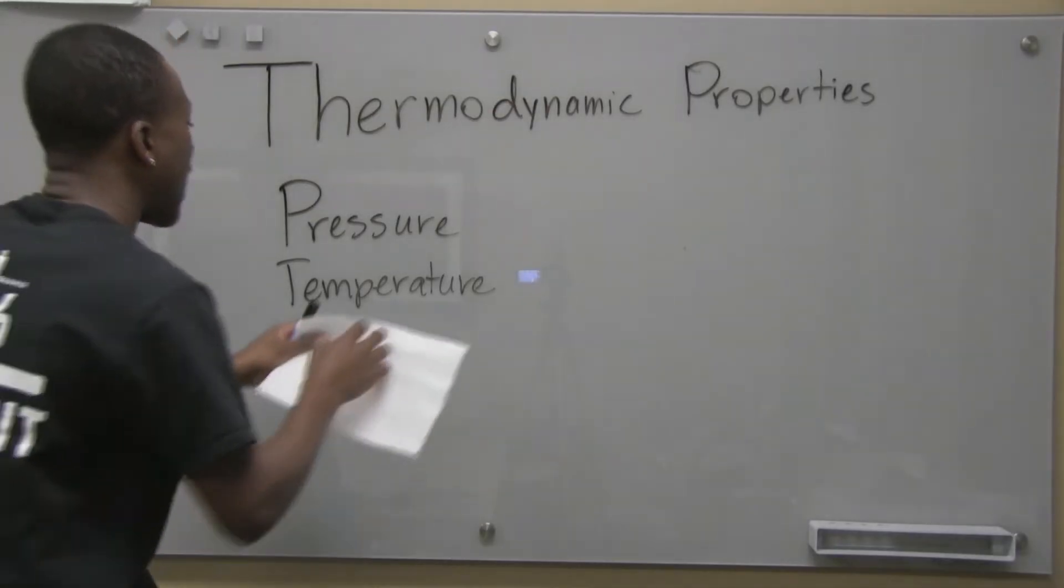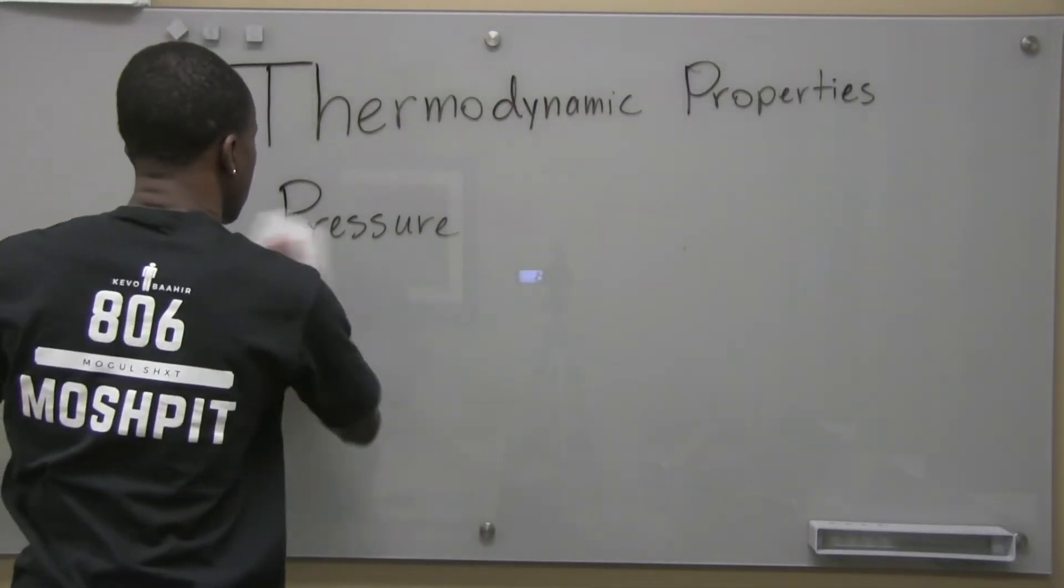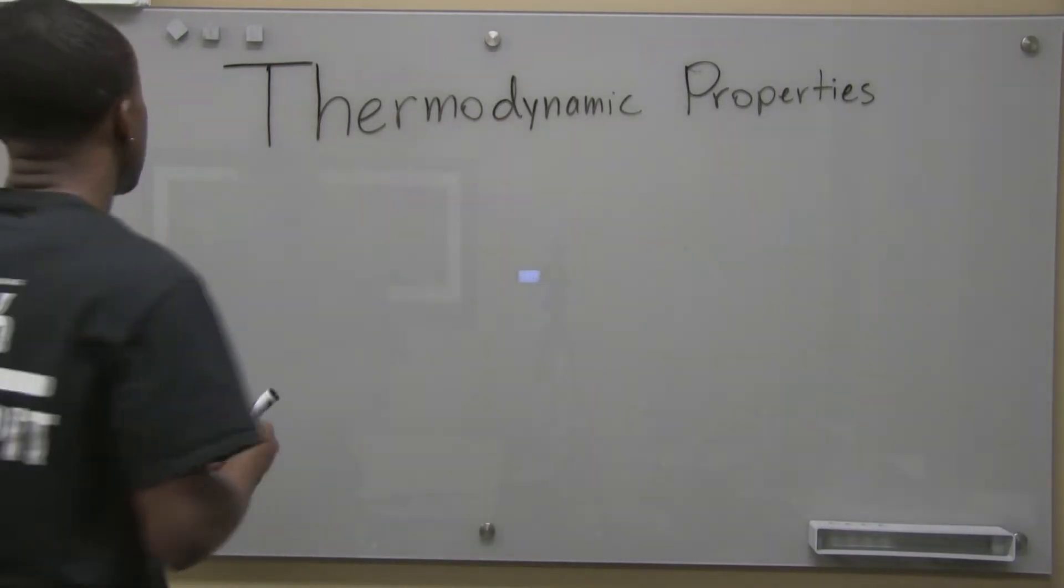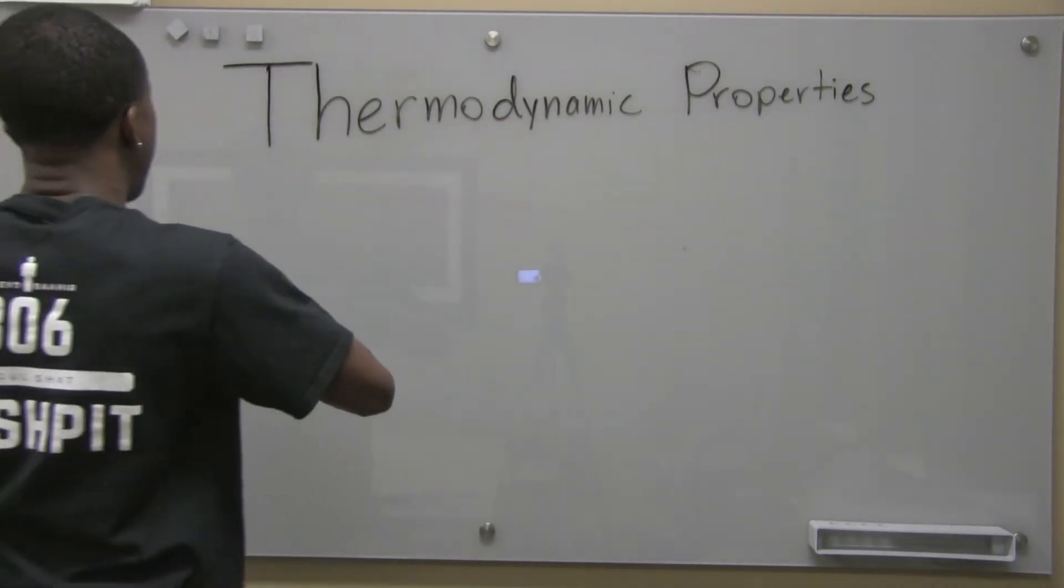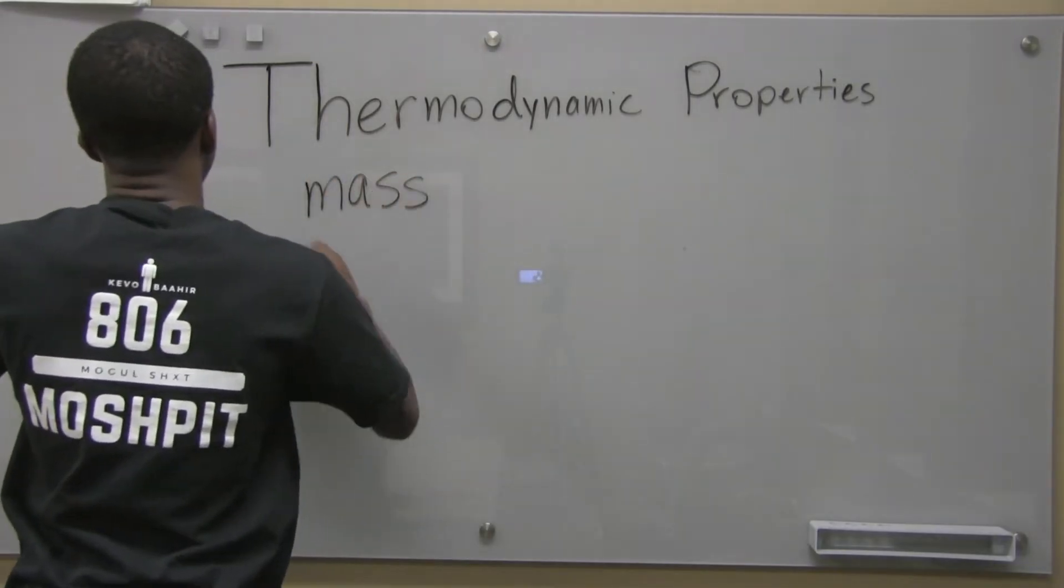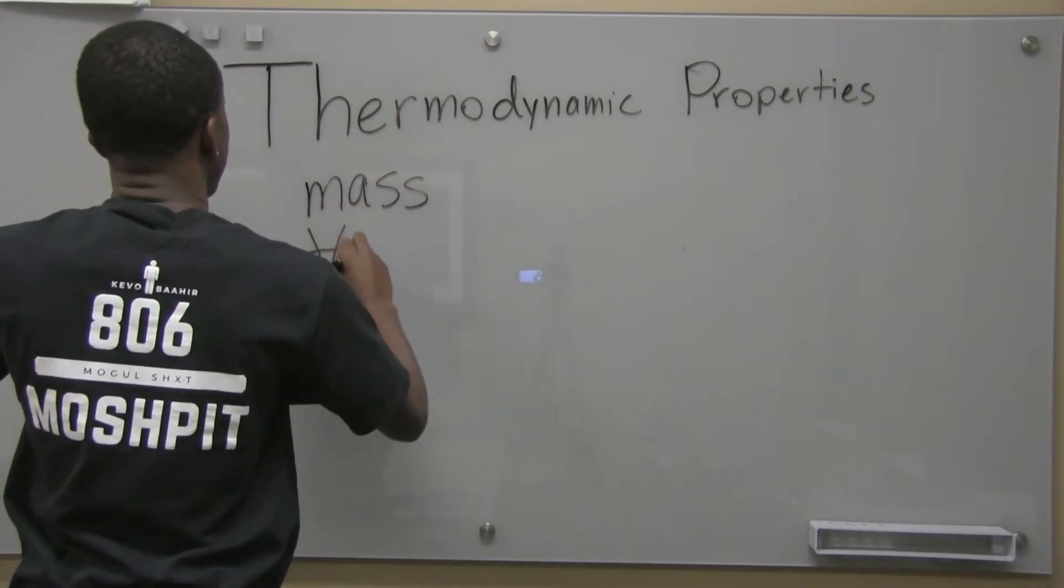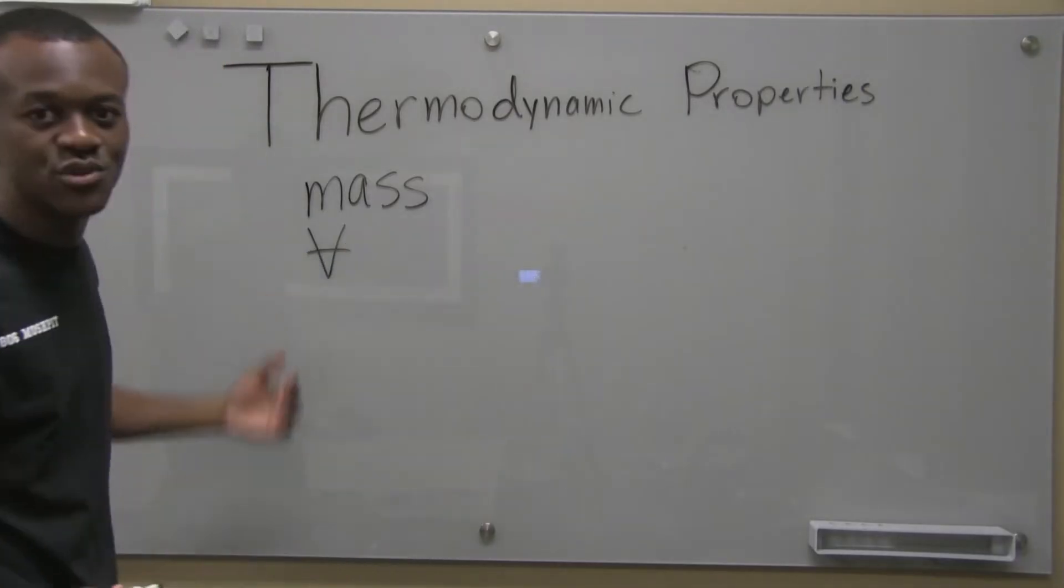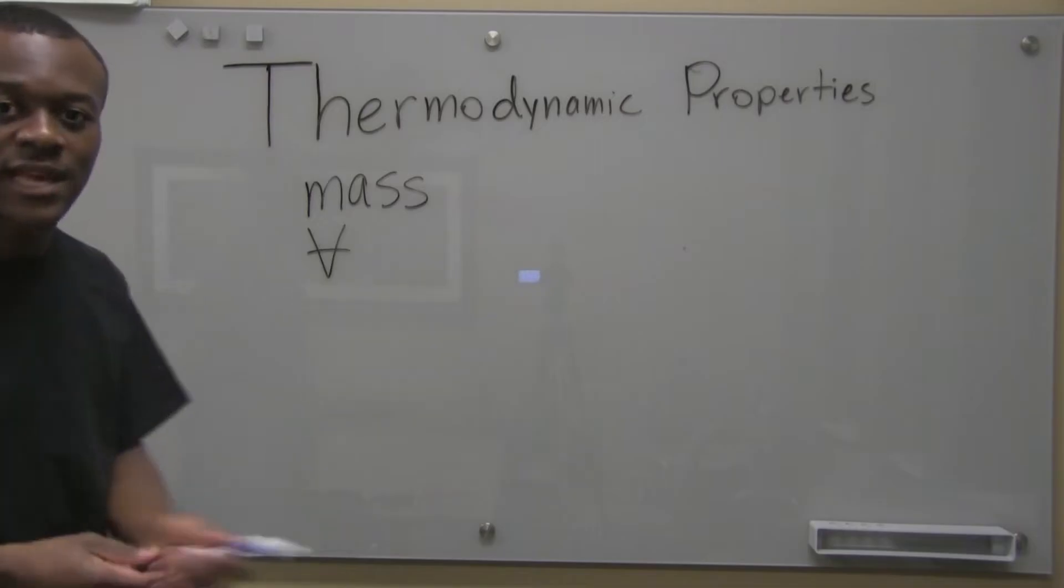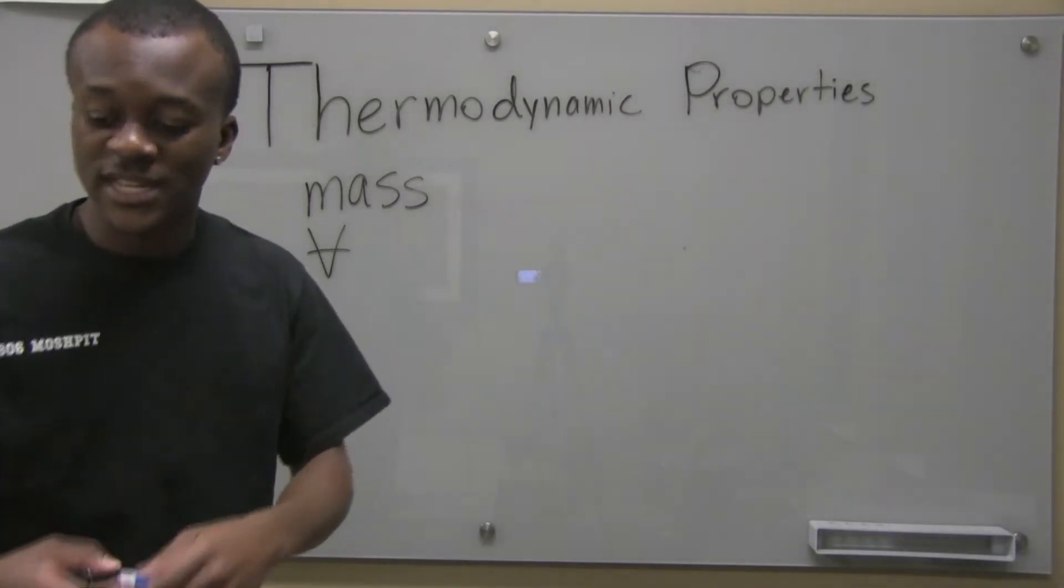Now, there are things called extensive properties. Extensive properties do depend on the size of the system. So these are things like mass, volume. I just do the V there, but that's the sign for volume. Specific volume, things like that. So those are examples of extensive properties.